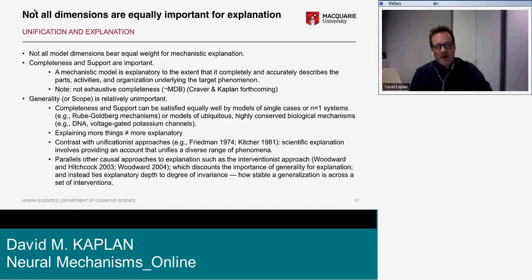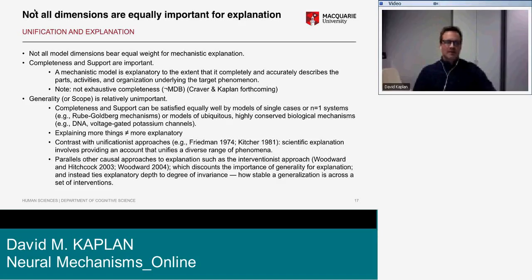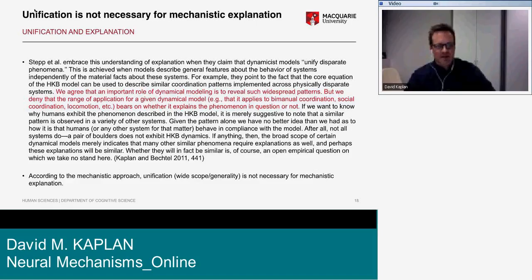The mechanistic approach basically rejects the idea that explaining more things is tantamount to being more explanatory — in contrast with the unification approach. This parallels the interventionist approach, which also discounts the importance of generality and instead ties explanatory power to the degree of invariance — how stable a generalization is across the setting of interventions.